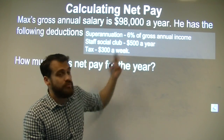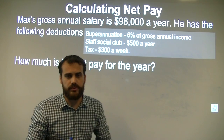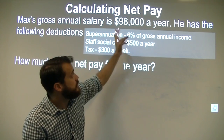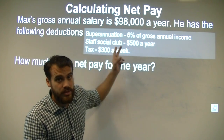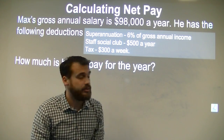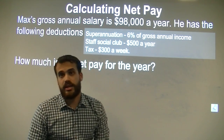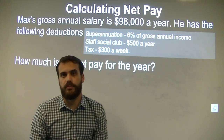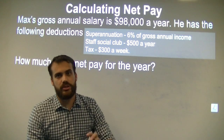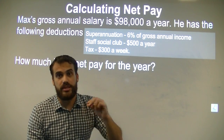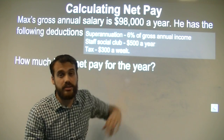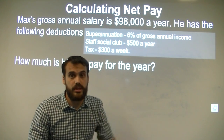The staff social club is $500 a year — that one's really simple. His gross income is $98,000 a year; the staff club is $500, so we'll just deduct that. The tax one is just a little more complicated. If it's $300 a week, we need to know how much the tax is per year, because we want to subtract it from this $98,000 per year.